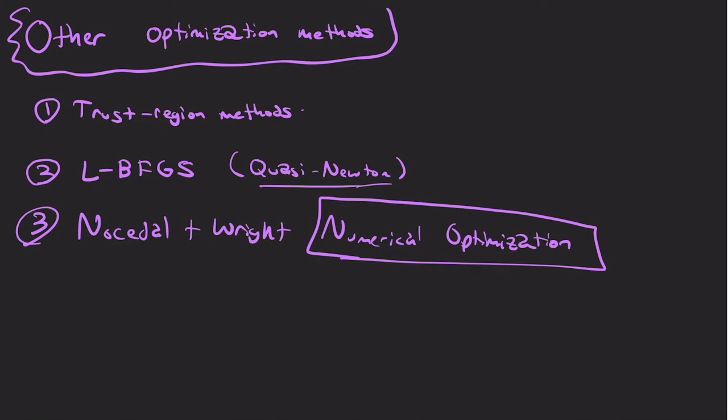Trust region methods sort of take a, you know, you have a region where you trust the approximation of the function. And then based on certain conditions, you either shrink this trust region or you make it bigger. Because there's always a trade-off of, you know, you want to see the whole optimization landscape, but it's too computationally intensive to actually see it all. So there's this trade-off. And that's the idea behind trust region methods.